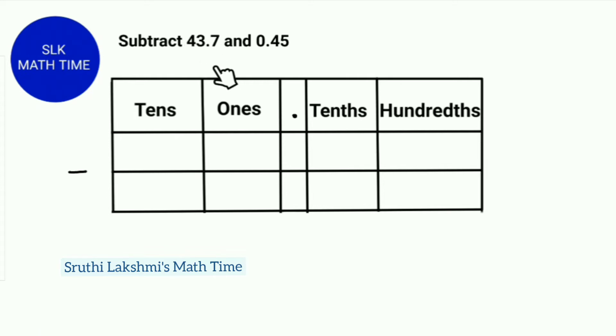Let's subtract 43.7 and 0.45. So let's write the decimal numbers for 43.7. Write 4 then 3 then put a decimal point then write 7. Now for 0.45, write 0.45.